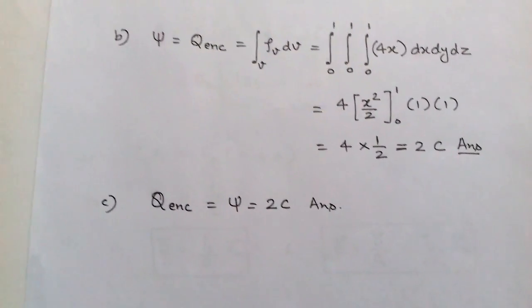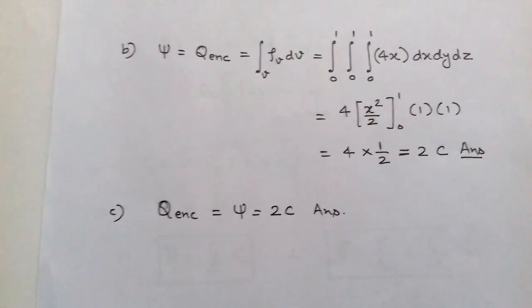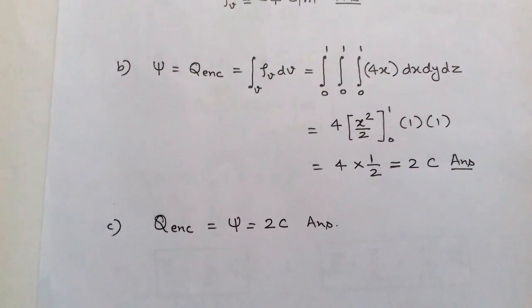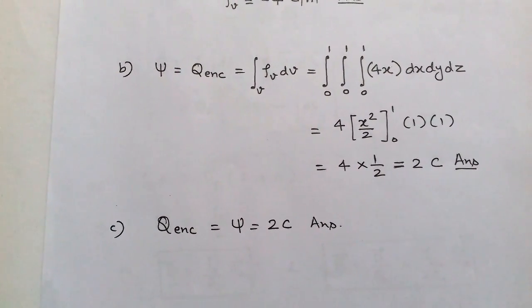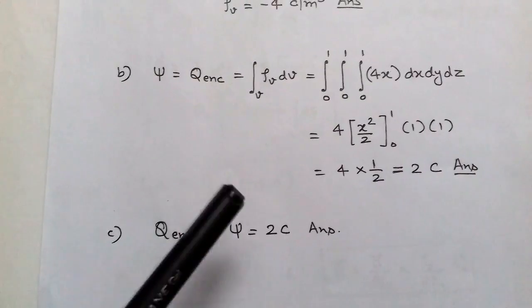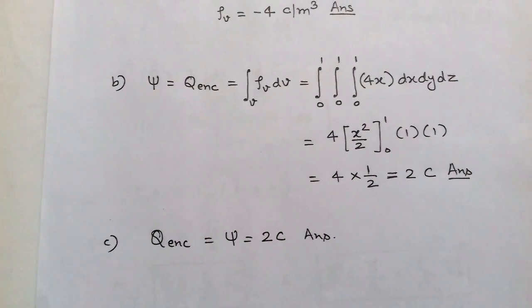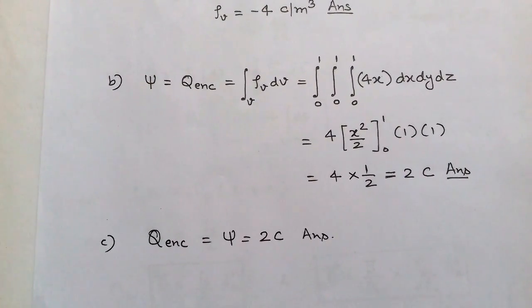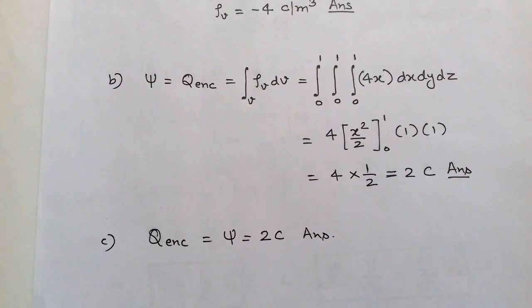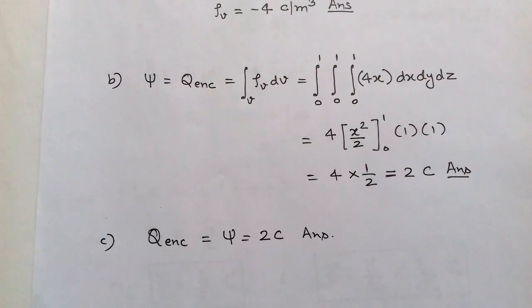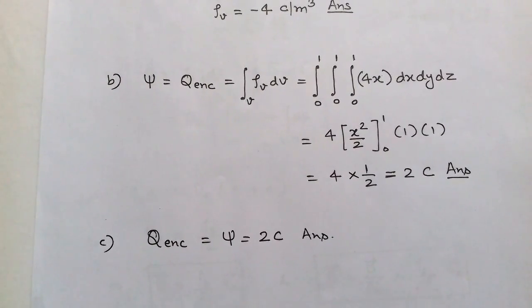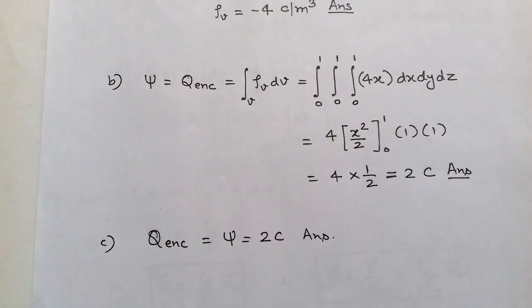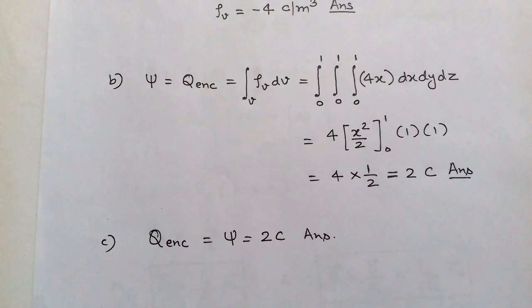For part (c), the total charge enclosed by the cube: according to Gauss's law, the total charge enclosed equals the total flux ψ. Since in part (b) we calculated ψ = 2 coulombs, the total charge enclosed Q is also 2 coulombs.